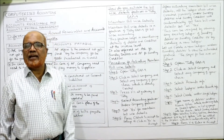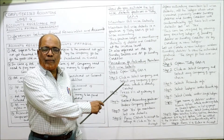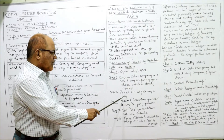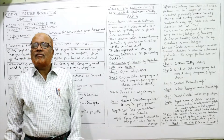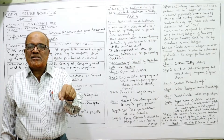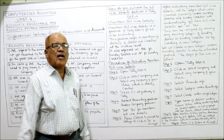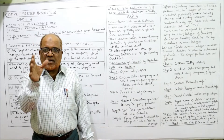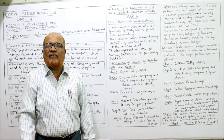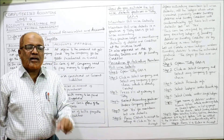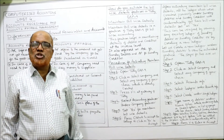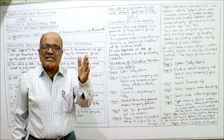Step 3: Press F11 at the gateway of Tally. After opening the company, press F11. Step 4: Select accounting features. After pressing F11, select the accounting features option under company features. On the screen you will find company features — click it, and under company features you will find accounting features. Under accounting features, you will have the option for maintain bill-wise details.